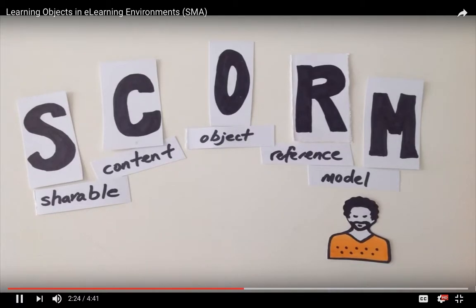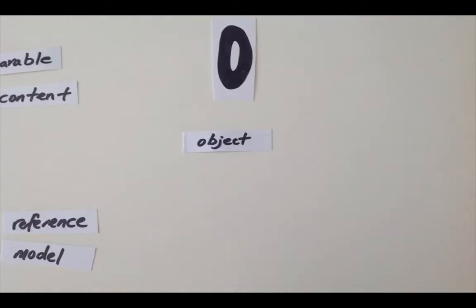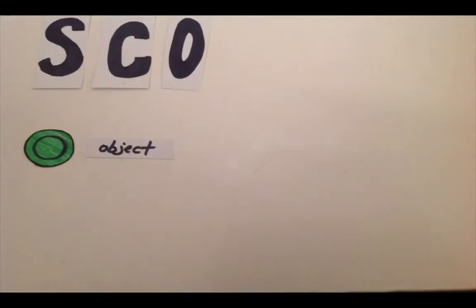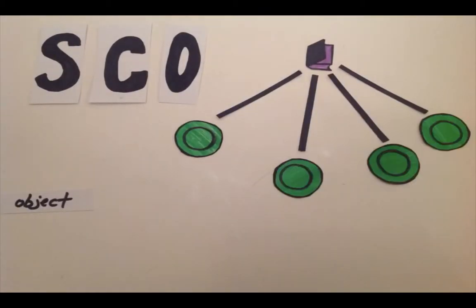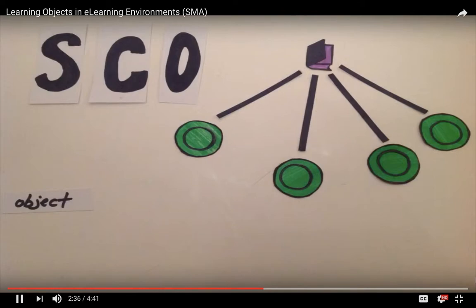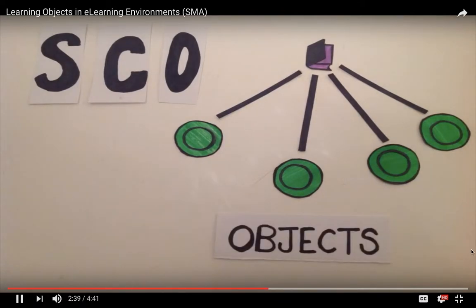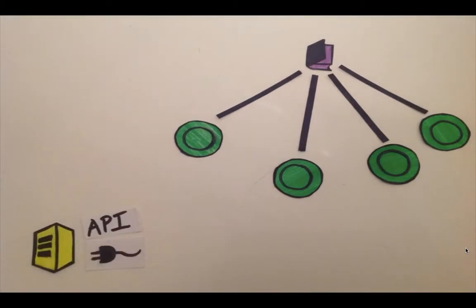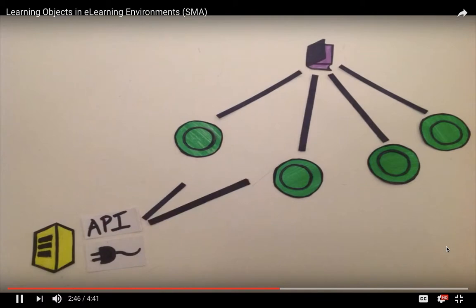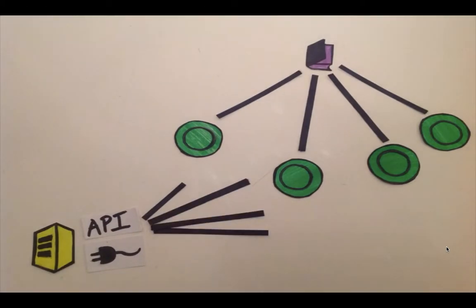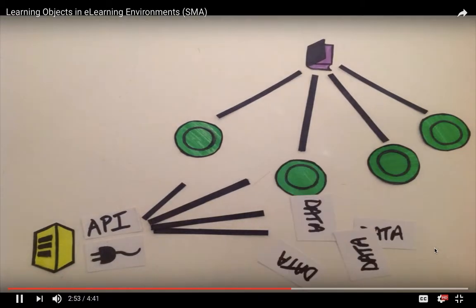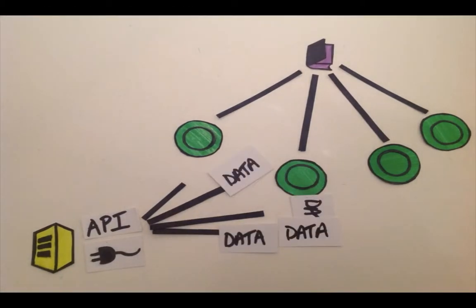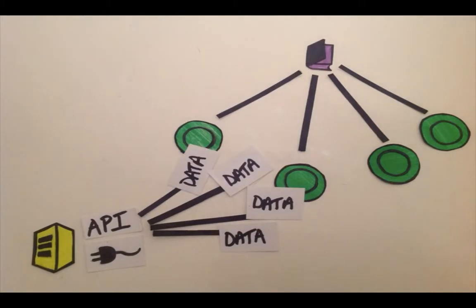Within the SCORM reference model, a learning object is called a SCO. A course normally consists of multiple SCOs. When loaded into a SCORM-compliant LMS, the SCOs and the LMS talk to one another via the API, or Application Program Interface. The SCORM package tells the LMS the sequencing and order of the SCOs, how the content is organized including what files exist, and what information needs to be set such as bookmarking, tracking, and scoring data.